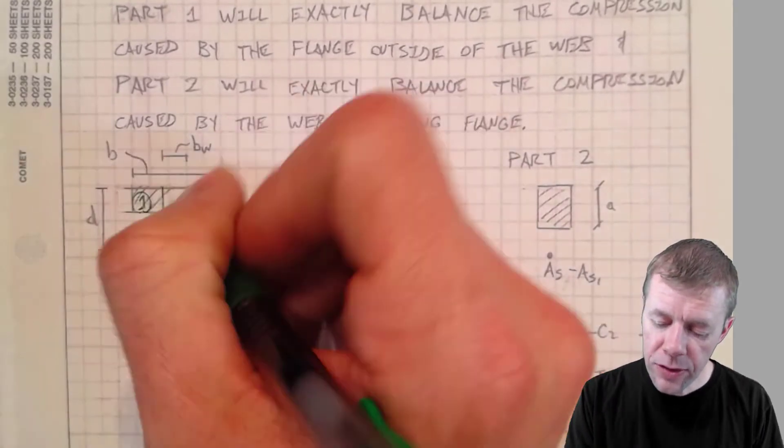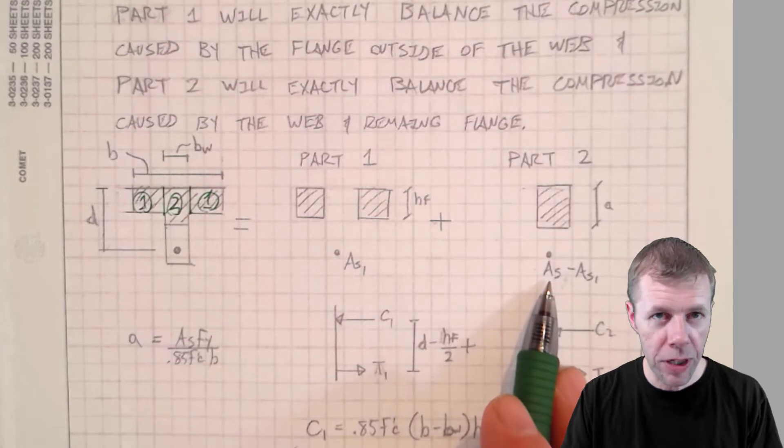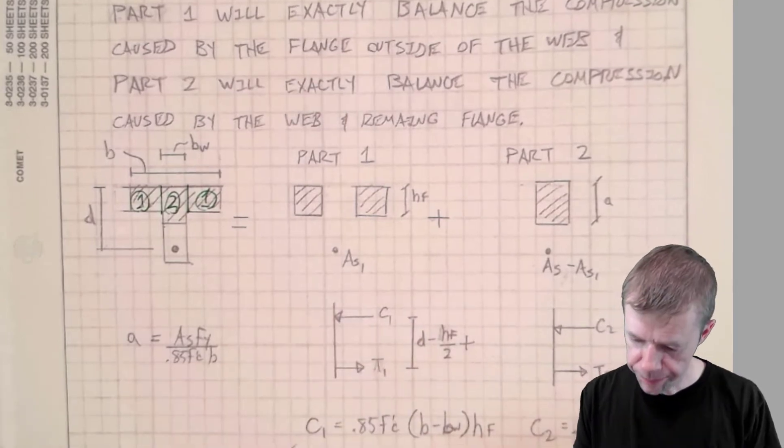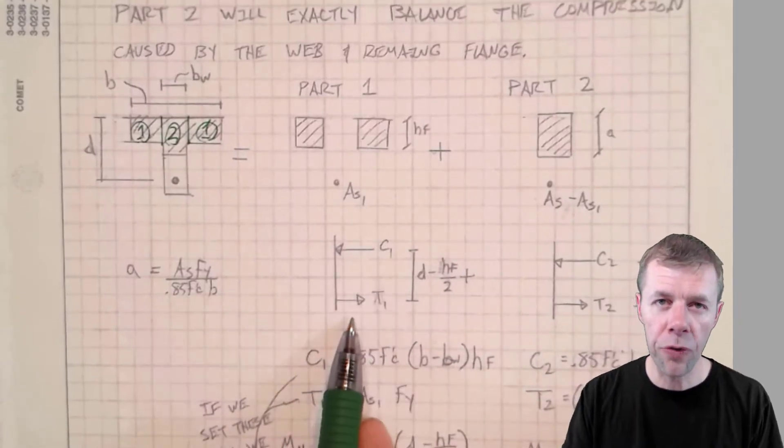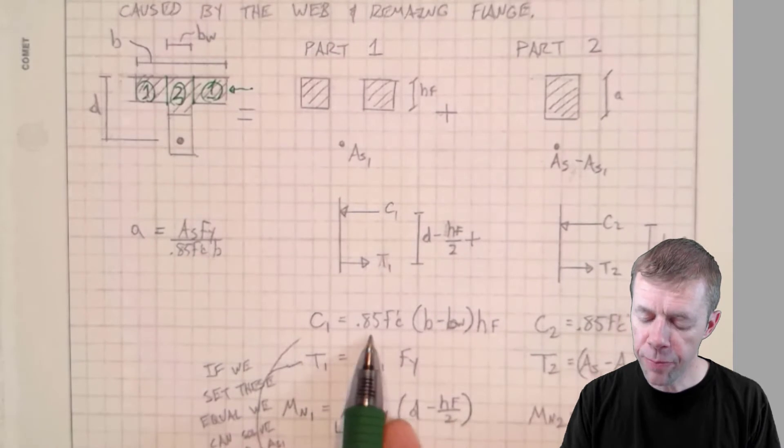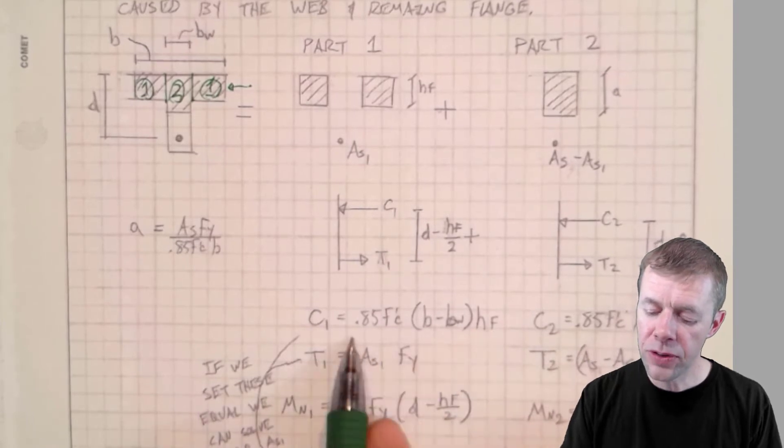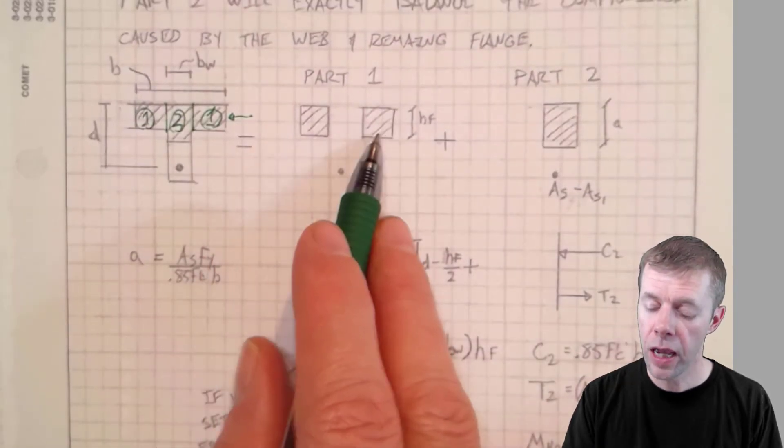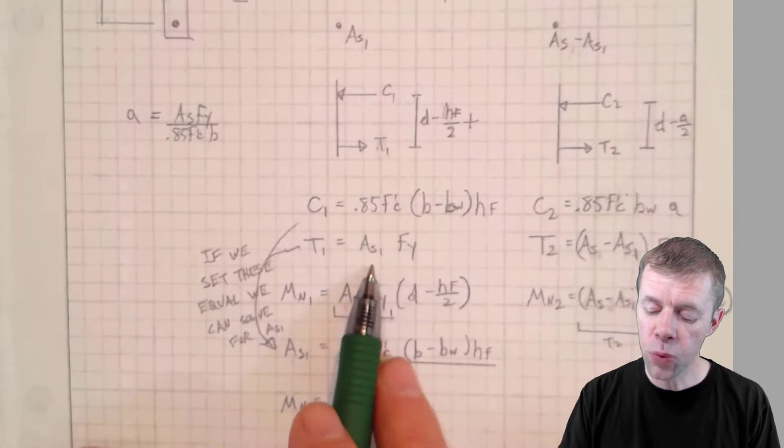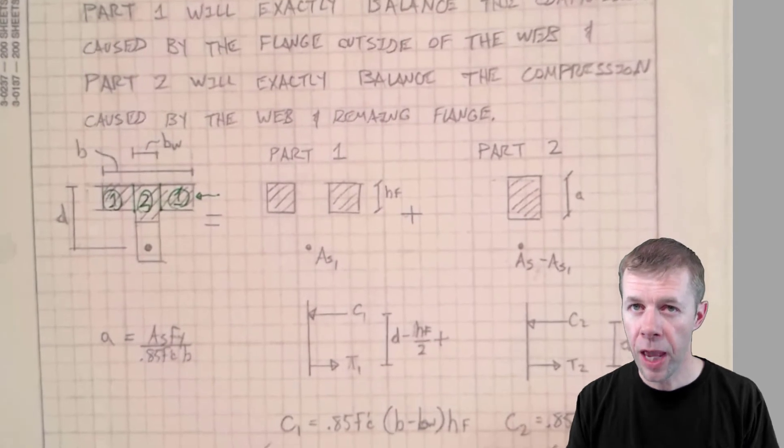Then part two. Let's take part two. That's the stuff in the middle. We're going to take the remainder in the middle and the remaining amount of steel. How much steel? The steel I started with subtracted what I took out earlier. Great. This is my compression resultant. This is my tension resultant. This is my moment arm. D minus the height of the flange over two. 0.85 times F prime C times B minus BW times the height of the flange. That is basically taking the volume of these blocks. The area multiplied by the stress, which is 0.85 times F prime C. Now this is AS1 times FY. Now let's go over and do part two. I'm going to do the same exact thing.